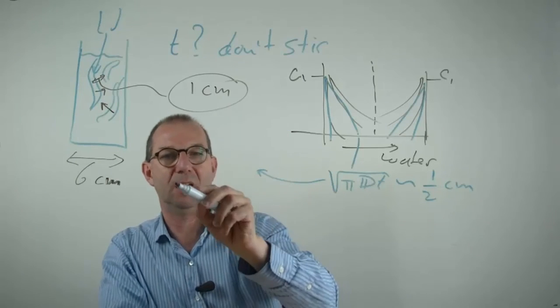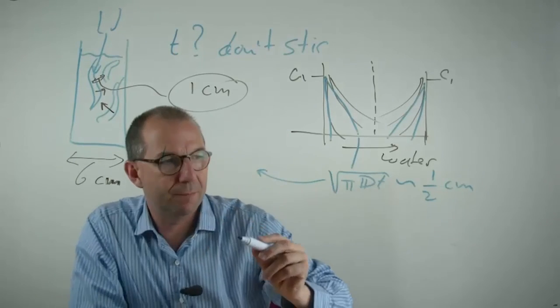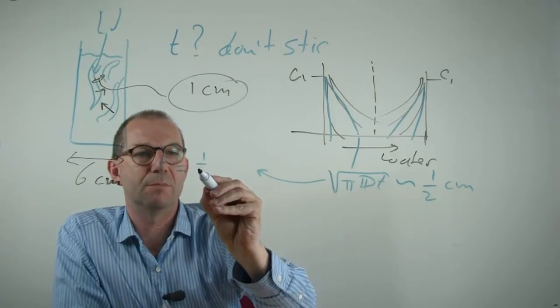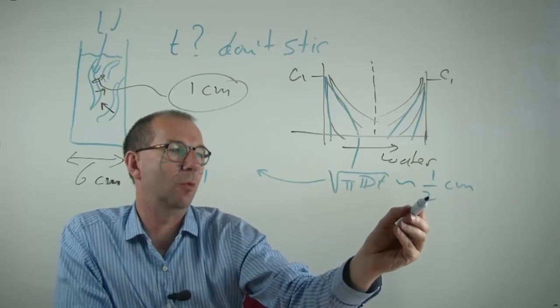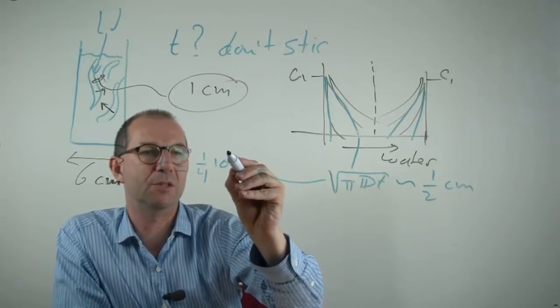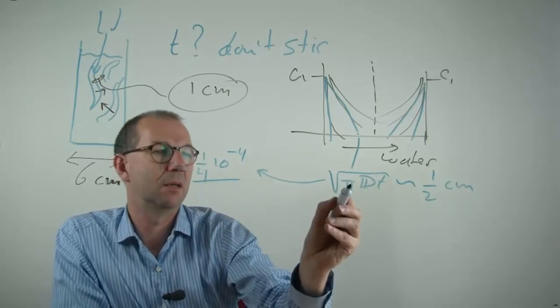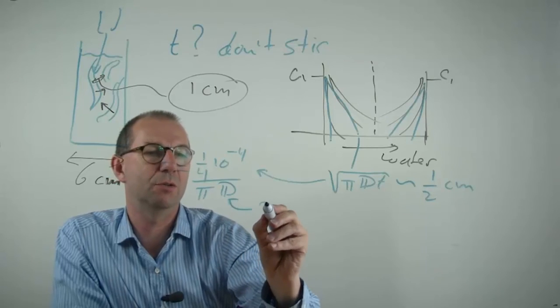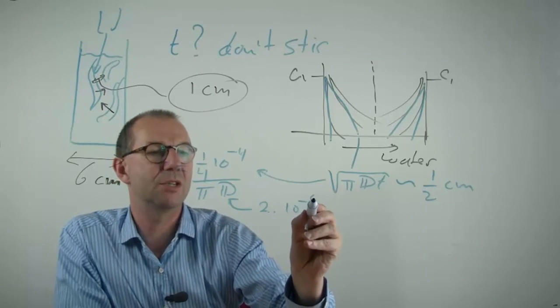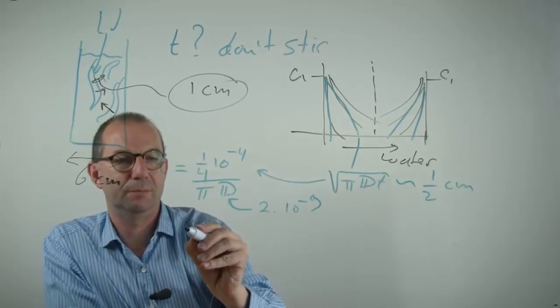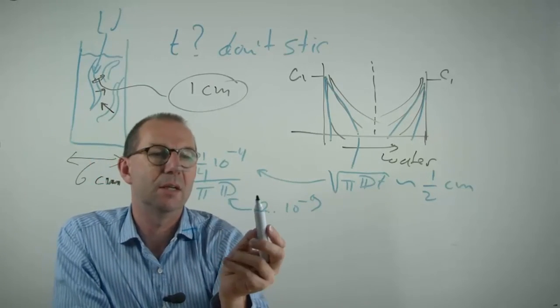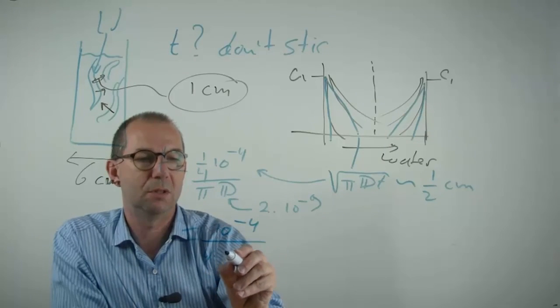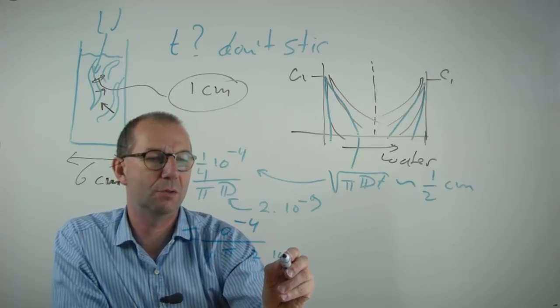And with that I can compute the time t equals half centimeter squared. So that's one fourth, one quarter, 10 to the minus four divided by π and D. Diffusion coefficient on the order of 2, 10 to the minus 9. And thus I equate that this is 10 to the minus 4, 4π, 2, 10 to the minus 9.